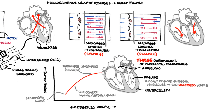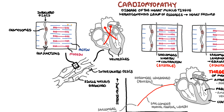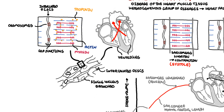Afterload is the force the cardiomyocytes must overcome to pump blood out of the body. Contractility of the heart muscle can be independent of preload; for example, the autonomic nervous system can influence cardiac contractility. Troponin is attached to the sarcomere structures and is important in muscle contraction. Cardiomyocytes also contain many mitochondria to produce large amounts of ATP, which is needed because the heart is constantly pumping and always demands this energy.